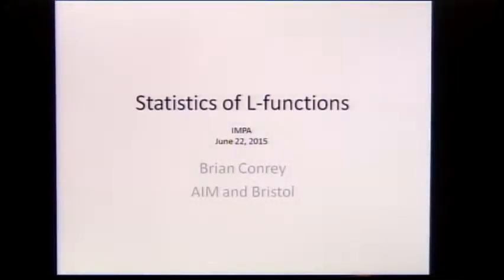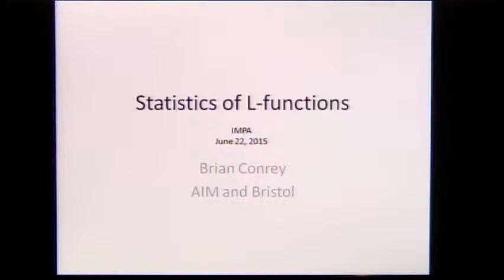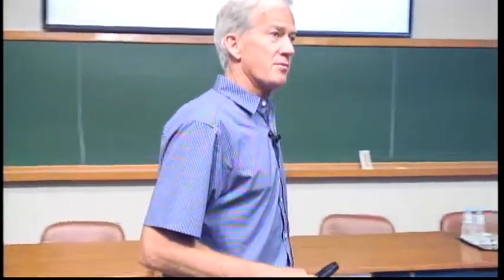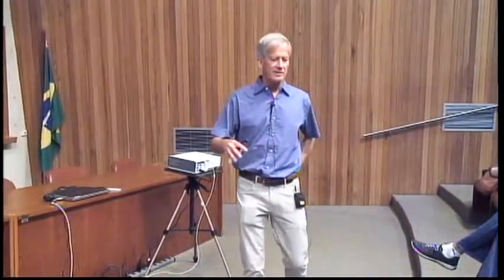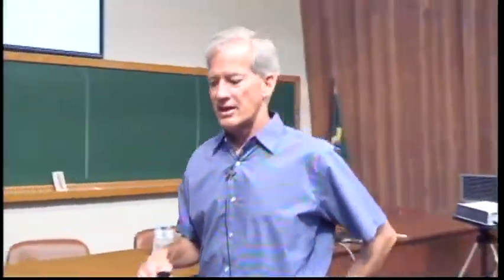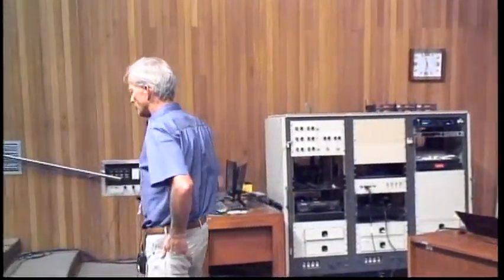I want to talk about statistics of L-functions, and in particular about the story that's emerged really a lot over the last 15 to 20 years or so, that involves number theory and random matrix theory putting together what I would say right now is a fairly complete picture of how the values of L-functions in families are distributed and how the zeros of L-functions in families are distributed. We can see these now as part of the same picture.